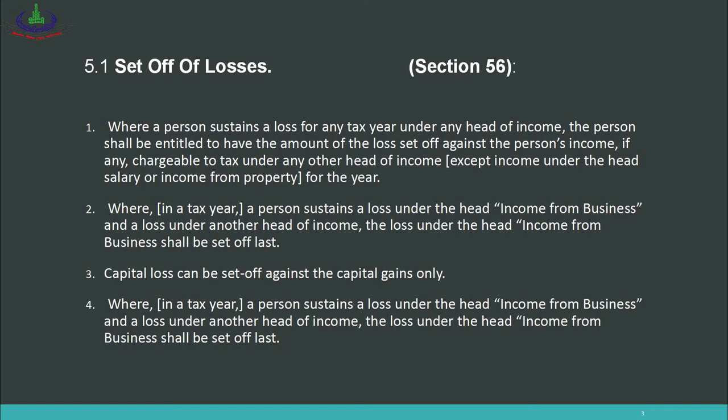This set-off applies to any income chargeable to tax under any head of income, except income under the head of salary and income from property for the year. As you know, no deductions are allowed from salary income, so there is no chance of a loss under salary. Similarly, no deductions are allowed from income from property, so no loss can arise there either. The remaining three heads — income from business, capital gains, and income from other sources — can generate losses.